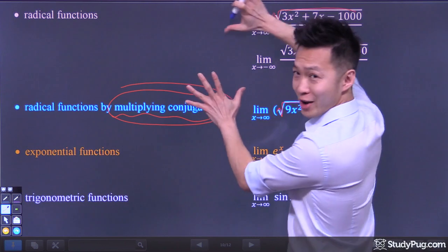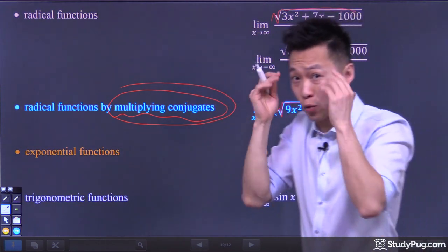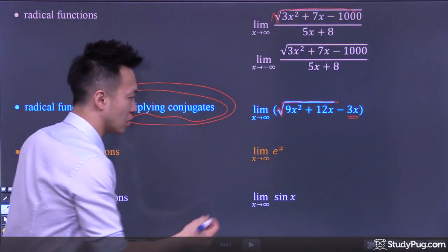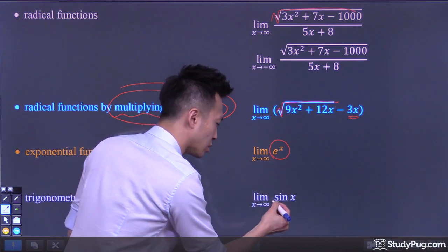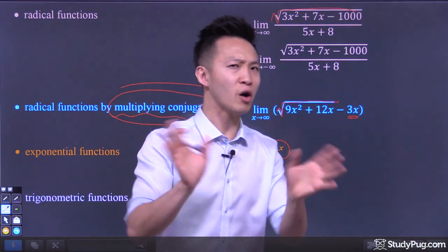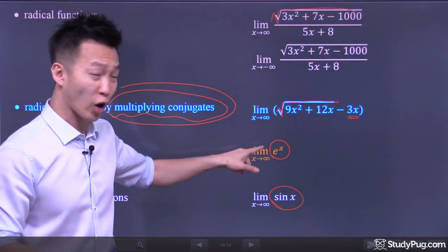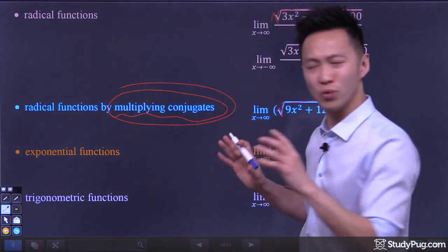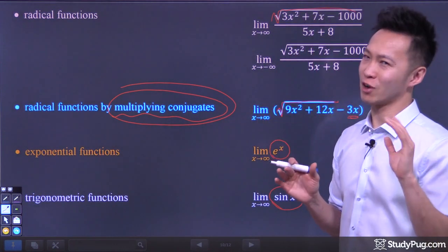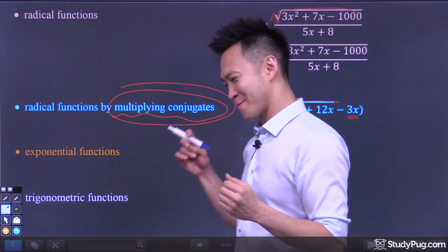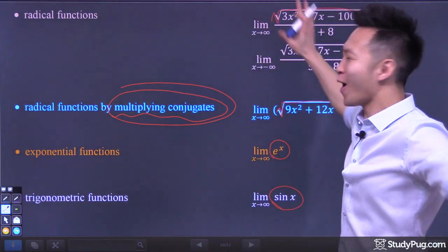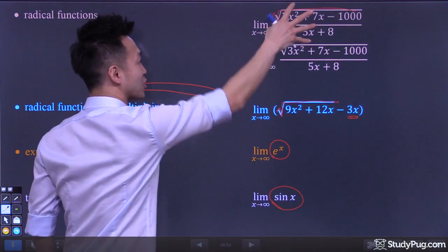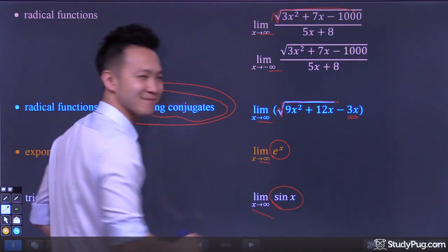Once we're done with the algebra, we're going to take a graphical approach to help us determine the limit at infinity for exponential functions as well as trigonometric functions — no more algebra, just a graphical approach. So that's a really cool lesson, and you're going to have a lot of fun. So sit tight, and let's explore the magical kingdom of horizontal asymptotes by finding the limits of a function at infinity. Enjoy.